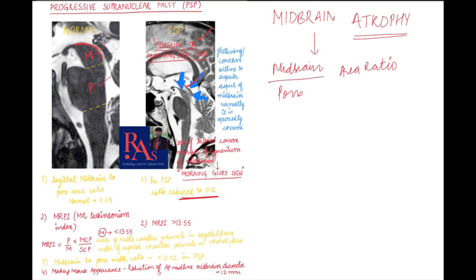Another sign is the morning glory sign, which refers to loss of the lateral convex margin of the tegmentum of the midbrain. In normal individuals, the lateral margin of the tegmentum is convex, whereas in Progressive Supranuclear Palsy the tegmentum is concave. This sign is also seen in multi-system atrophy.